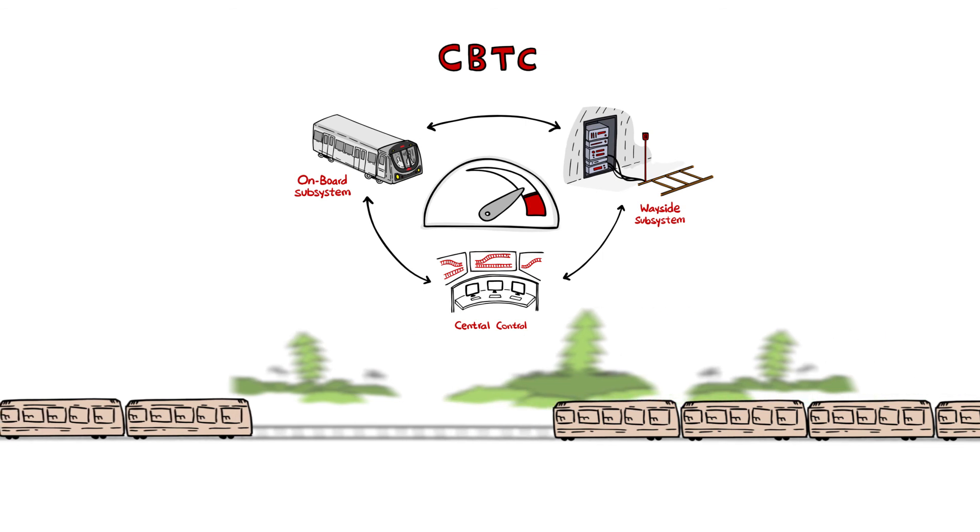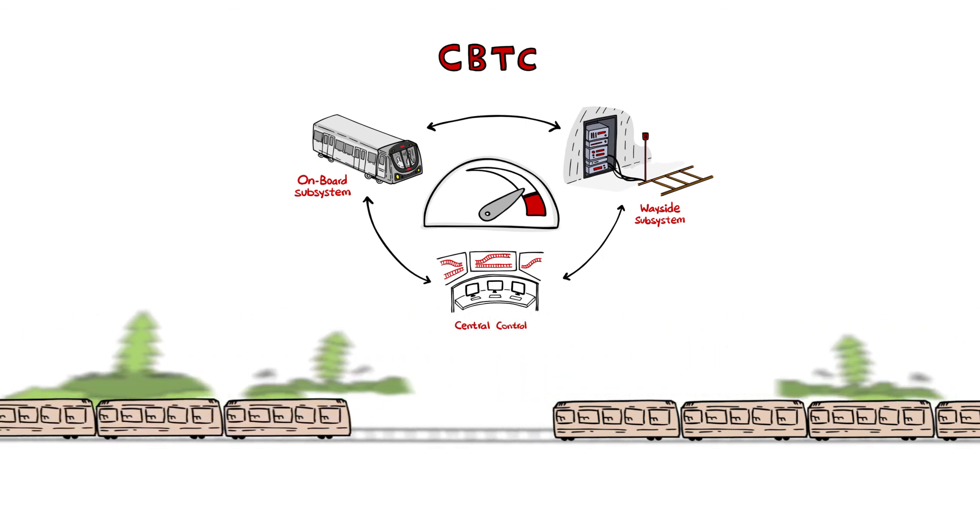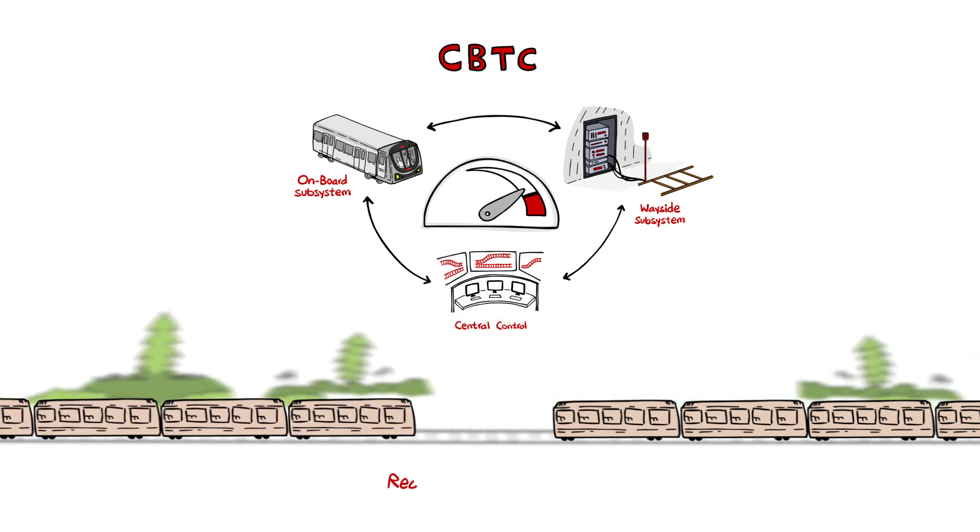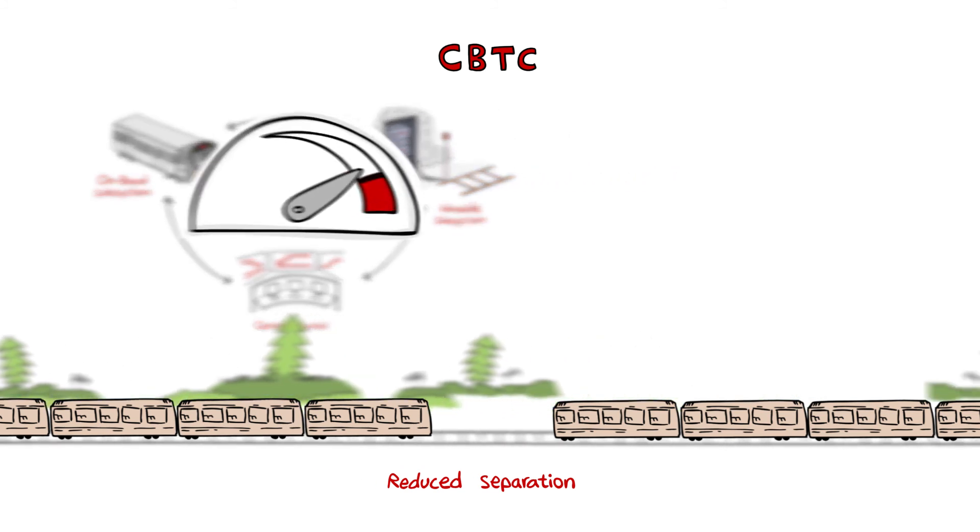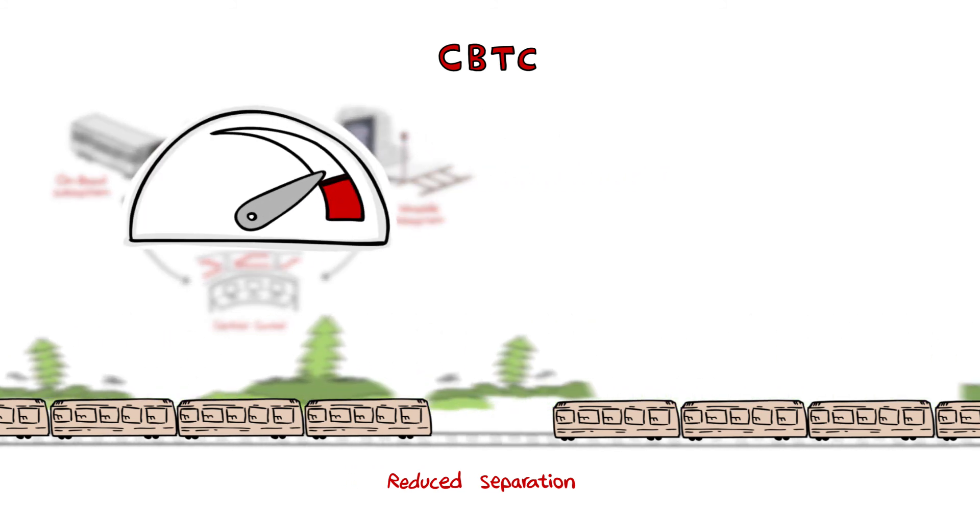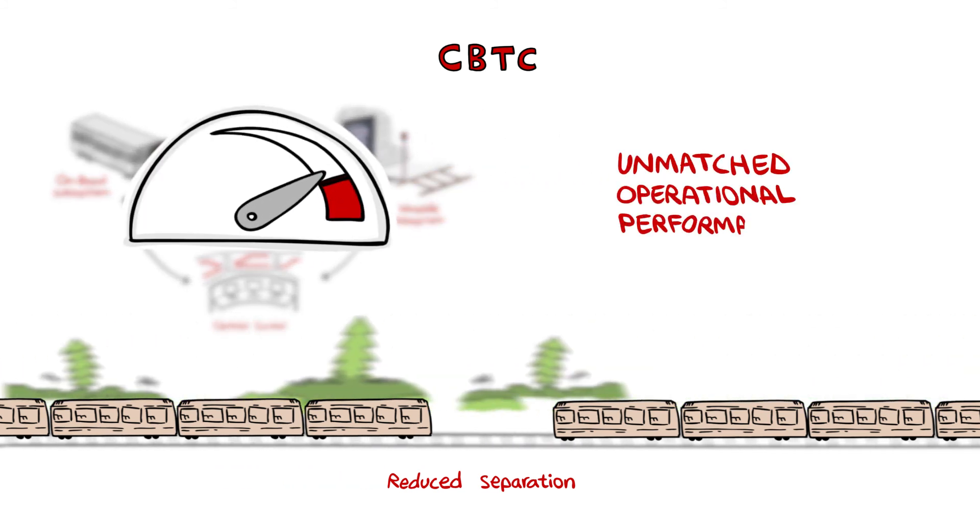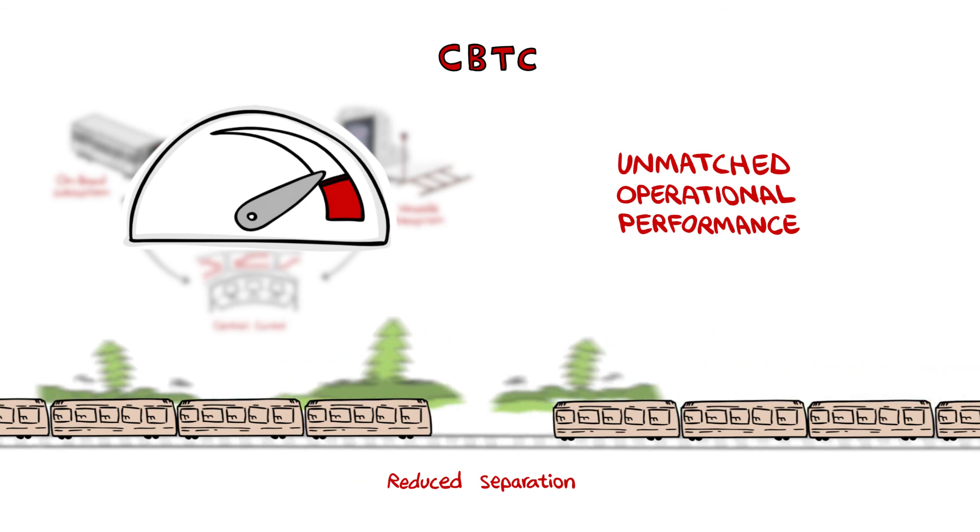This tight integration permits CBTC to bring trains closer together because adjustments can be made in milliseconds which is impossible by a human operator in a conventionally signalled subway. This tight integration allows CBTC to provide a level of operational performance that is unmatched by any conventionally signalled system.